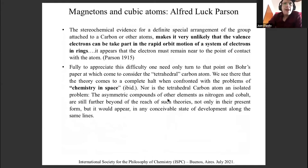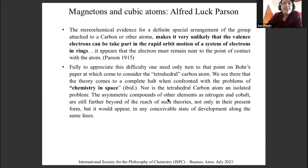As a co-worker of Lewis, Parsons was trying to oppose himself to the idea of revolving electrons. In general, he went to the chemical evidence for that. He claims that stereochemistry gives evidence for a definite spatial arrangement of the groups attached to a carbon or to other atoms, and this makes it very unlikely that the valence electrons can take part in the rapid orbital motion. In order to describe a stereochemical aspect in organic chemistry, Parsons and Lewis asked for a very static position of the electrons.